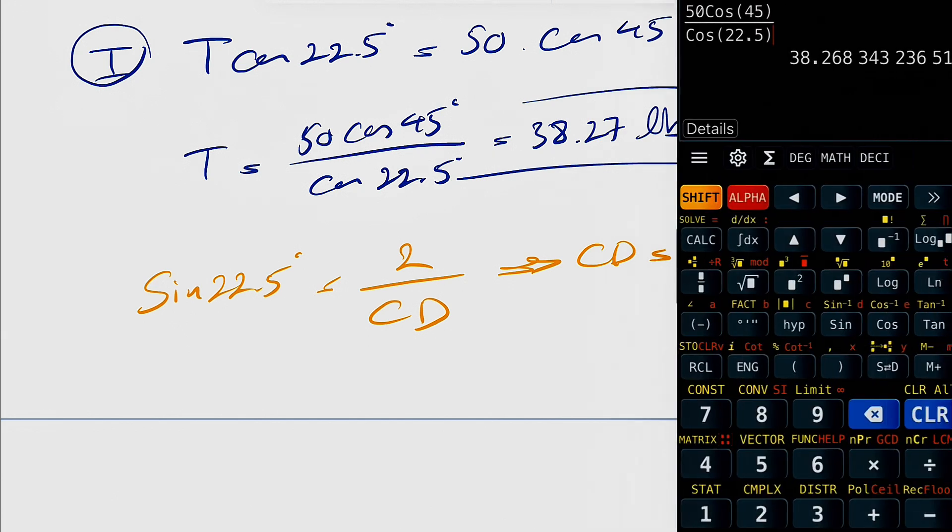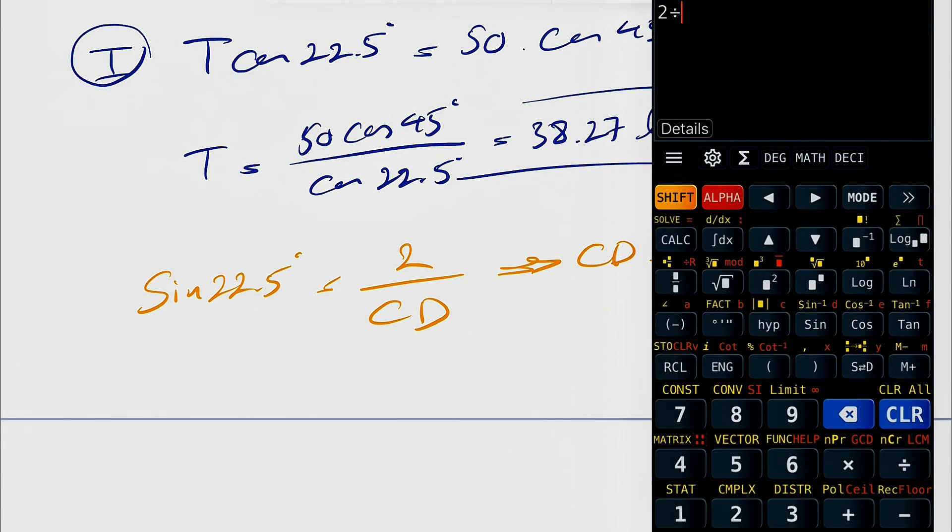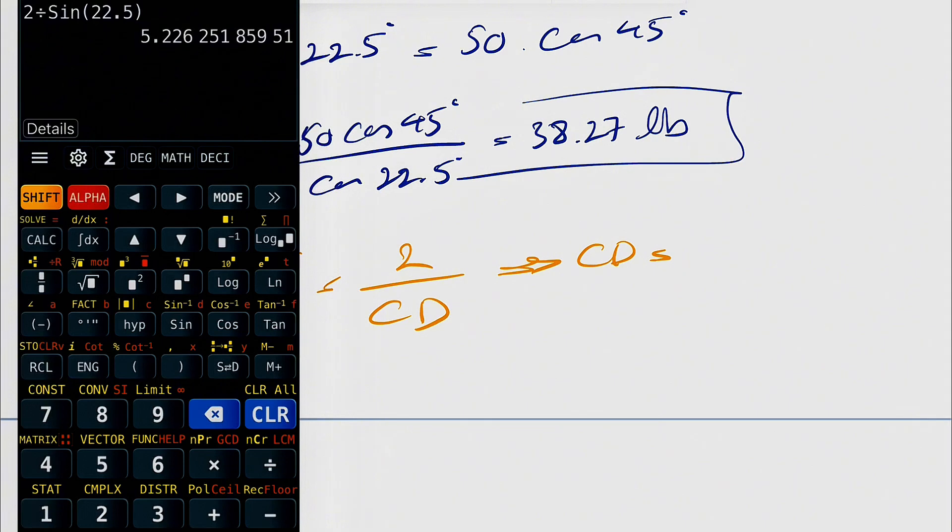So CD here is basically two divided by sine of 22.5, which is going to be 5.23 feet. And this is going to be the final answer for this question.